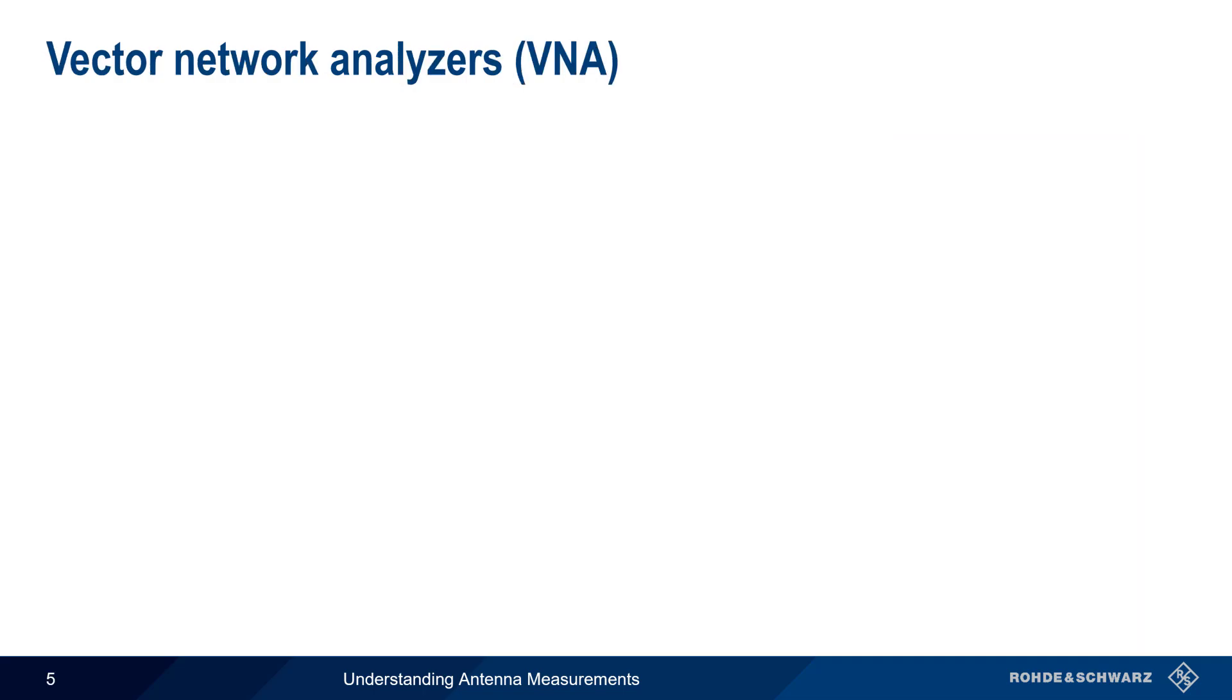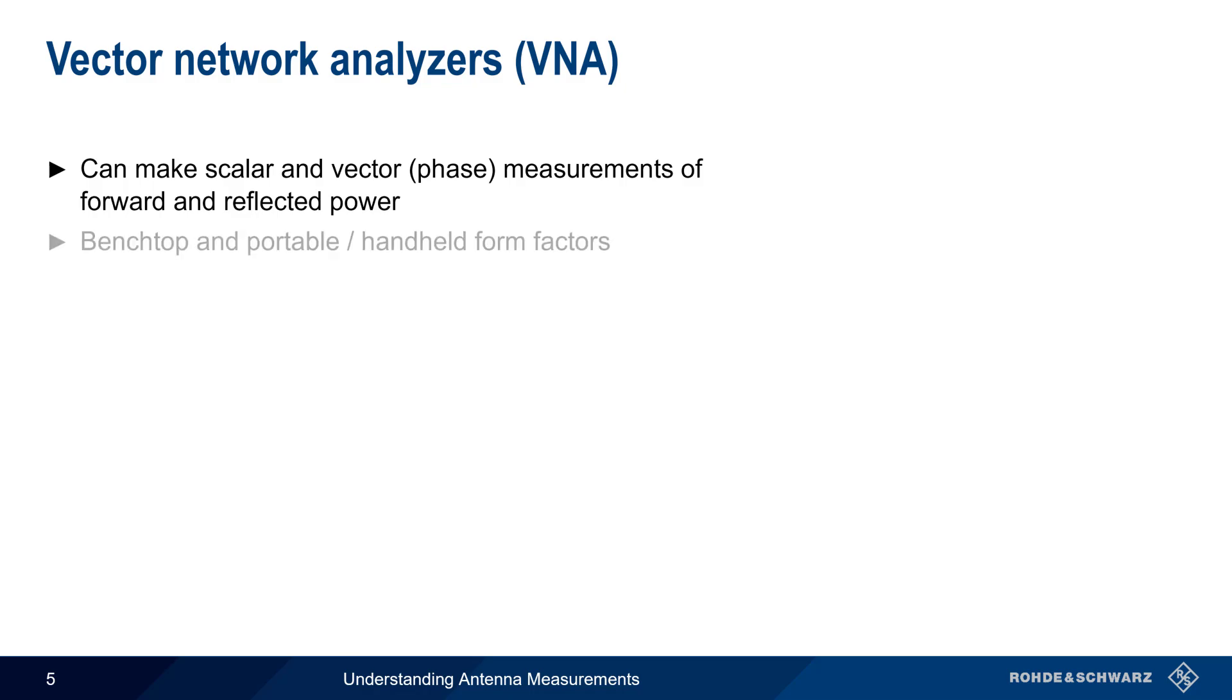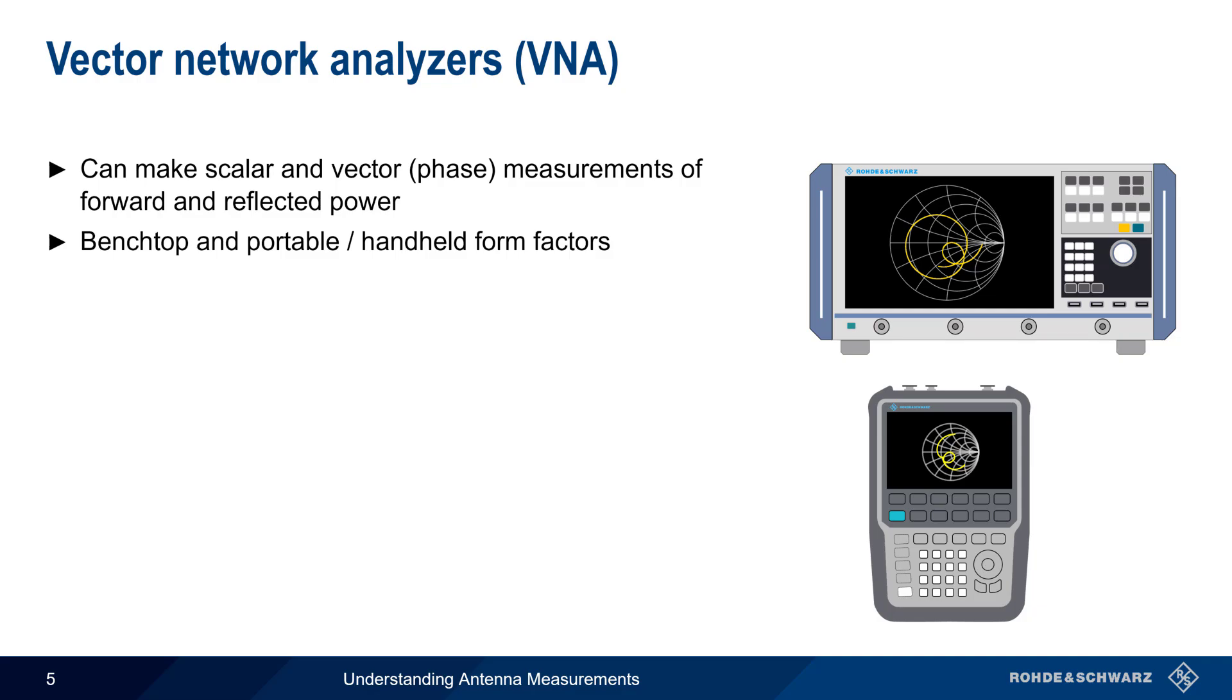Vector network analyzers can make scalar and vector measurements of both forward and reflected power, and they're available in both benchtop and handheld form factors. Modern VNAs have a wide frequency range, usually up to single or double-digit gigahertz, and they also have a high dynamic range. In addition, VNAs support various calibration procedures, which enables very high measurement accuracy and repeatability.